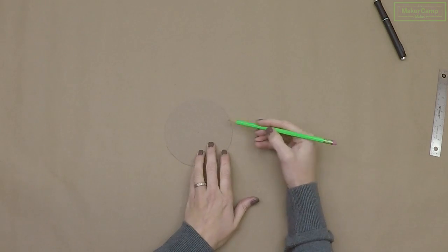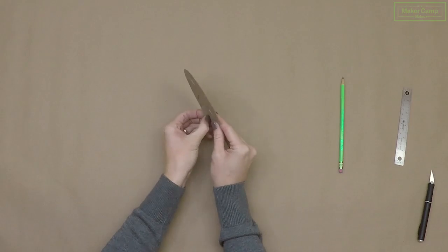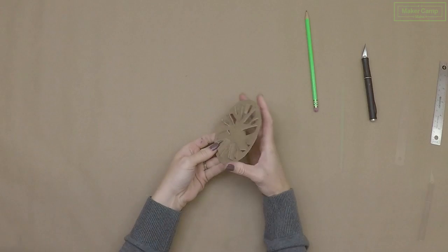Now we're just going to freehand our vents. This will serve as a guideline when we cut with our craft knife. We have eight vents but we're also going to add some little vents in between each of those eight vents.